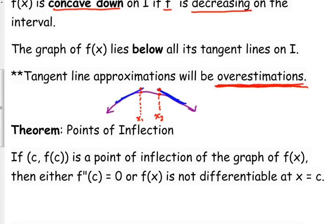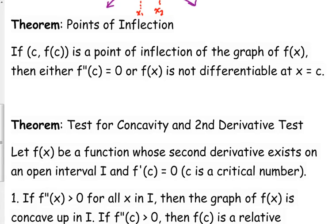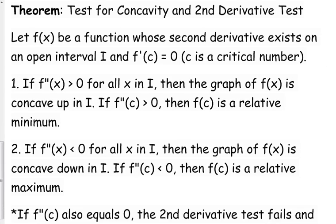Points of inflection are what we call changes in concavity. When the first derivative equals zero or is undefined, it's a critical point. When the second derivative is zero or undefined, it's a point of inflection — or possible points of inflection as some call them. Points of inflection occur when the second derivative is zero. The second derivative test is just like the first derivative test: take the second derivative, find where it's zero or undefined, then test points. If f double prime is greater than zero, the function is concave up; if it's less than zero, concave down.